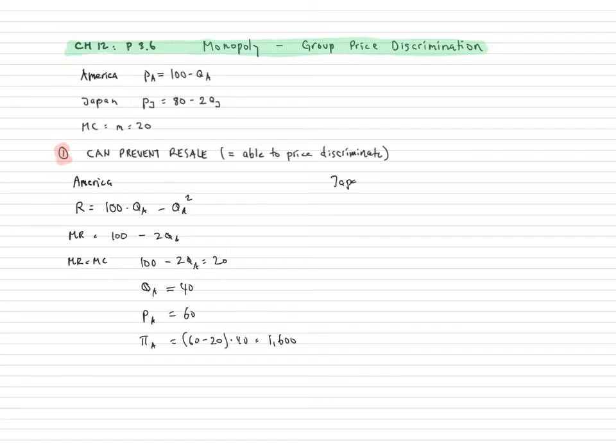All right, in Japan, the revenue function for Japan is going to be 80 times QJ minus 2QJ squared. The marginal revenue is equal to 80 minus 4QJ. Same intercept, twice the slope. So setting the marginal revenue equal to marginal cost gives us the quantity sold in Japan is going to be equal to 15.